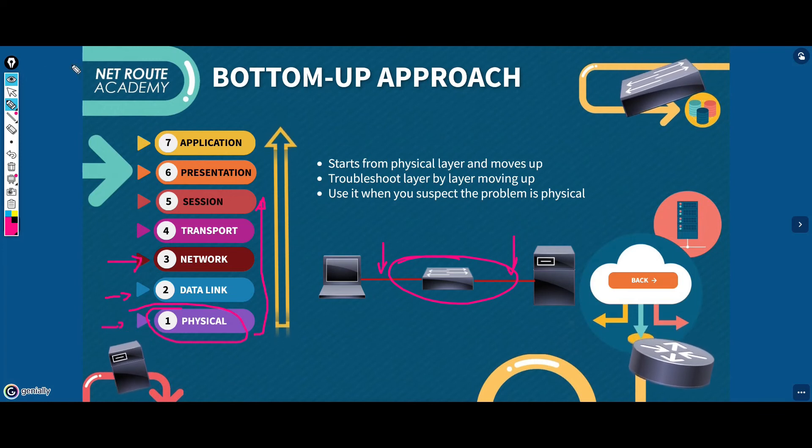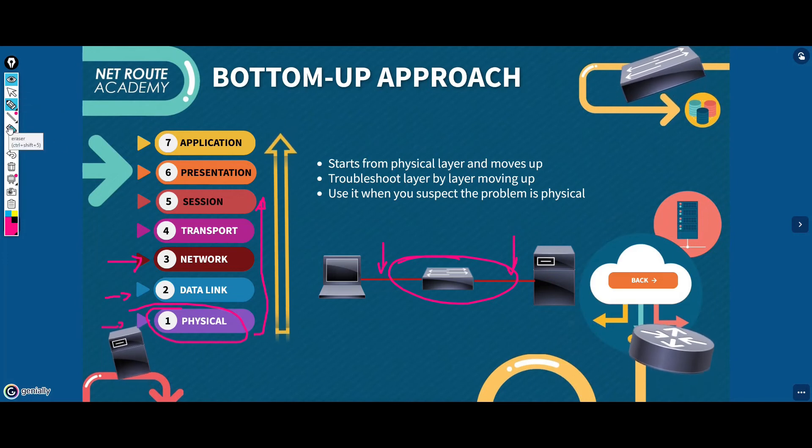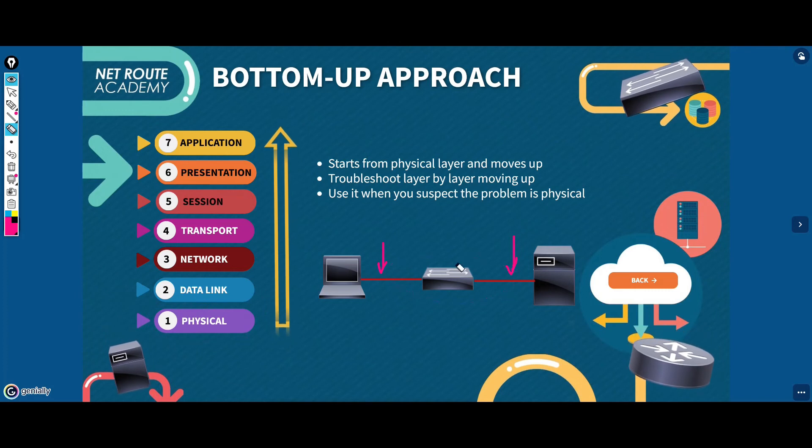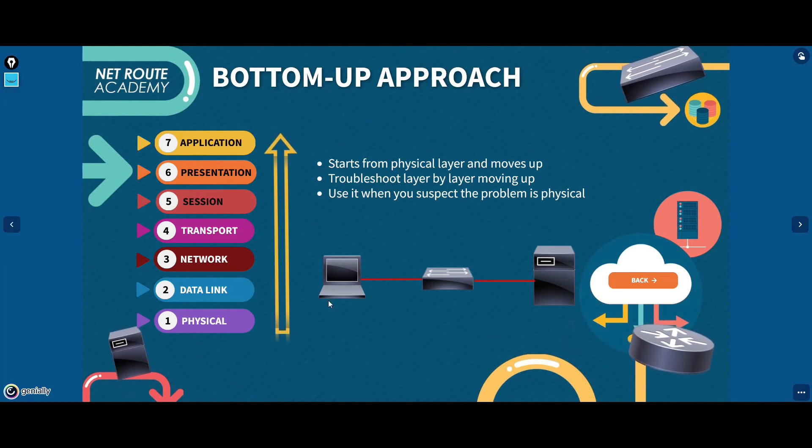If you conclude that all the elements associated with a particular layer are in good working condition, then you need to inspect the elements associated with the next layer up. You need to continue this process until you identify the causes of the problem. Your goal is to eliminate potential problem causes so that you can narrow the scope of the potential problems.